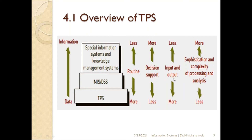Now if we look in input and output terms, then the lower-level systems will have more input and output. Whereas if we talk about higher-level data usage, there will be less input and output because the database is already being used to support decisions. And if we talk about sophistication - complexity of processing and analysis - then the lower-level information systems have less complexity and less analysis. But as we move to top-level information systems, we have to concentrate more on strategic decisions, so complexity increases.